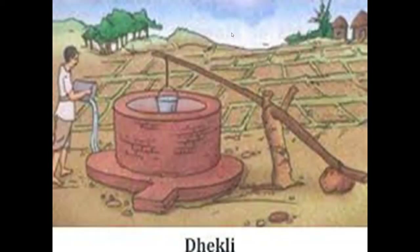In the dhikali system, the farmer ties a heavy load at one end and a water collector at the other end. As he moves the load down, water is collected from the well and the farmer can easily supply water to the field.